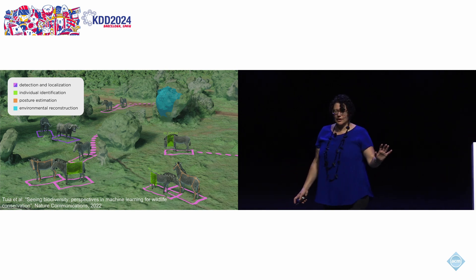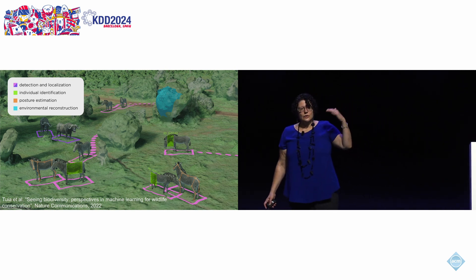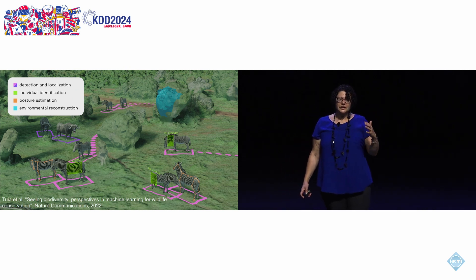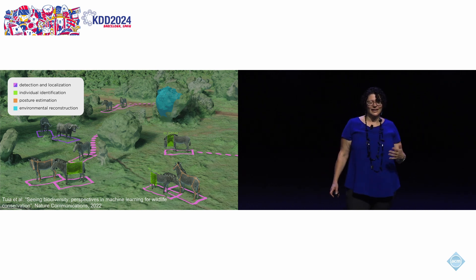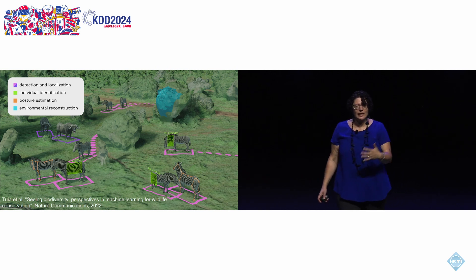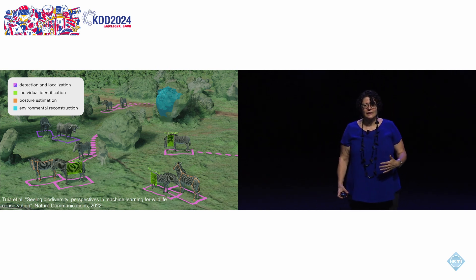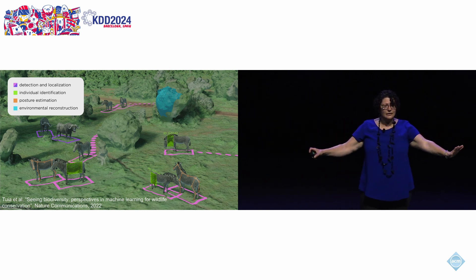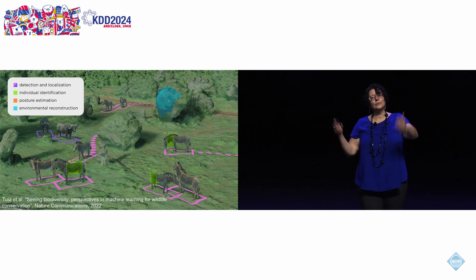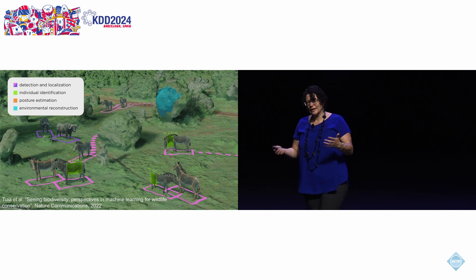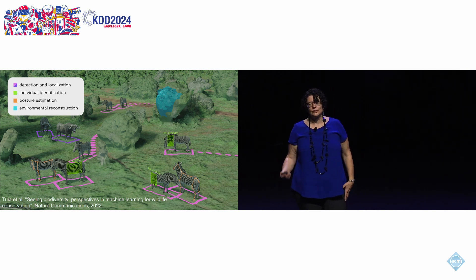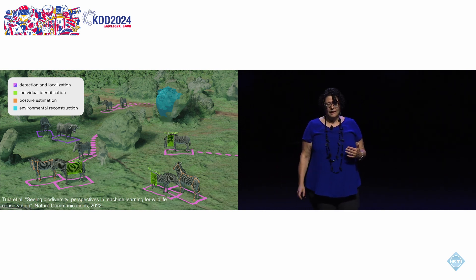Over the last 10 years, there has been an explosion of methods in computer vision and machine learning that allow us to look at image data much more carefully. Reasonably off-the-shelf today, we can take an image and, using detection and localization, find objects of interest — my favorite ones, zebras — put a bounding box around them. We can do species classification, even individual ID. We can do posture estimation and environmental reconstruction.